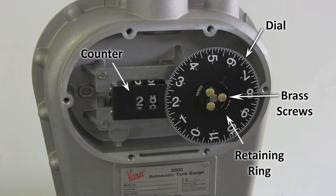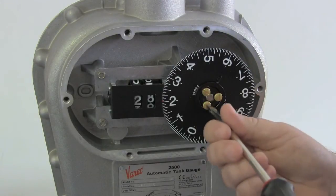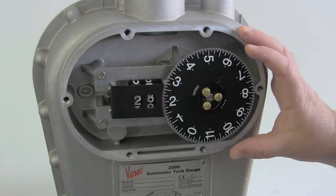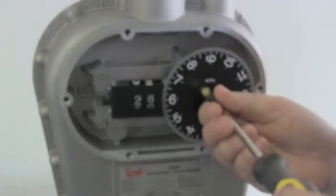We can now see the counter and dial, three brass screws, and the retaining ring holding the dial in place. If you only need to adjust the dial, simply loosen the three brass screws, turn the dial to the reading you need and then re-tighten the screws. Be careful not to make them too tight.